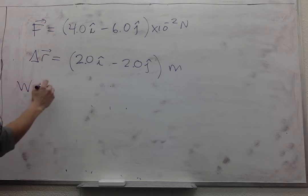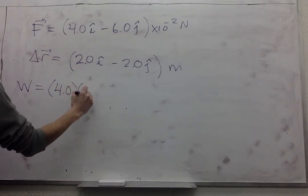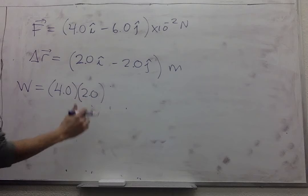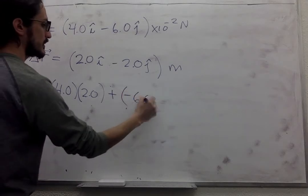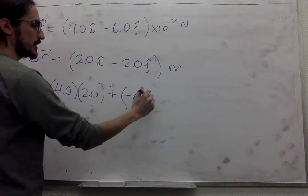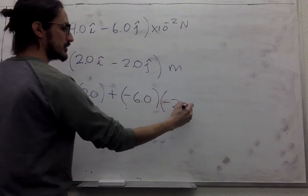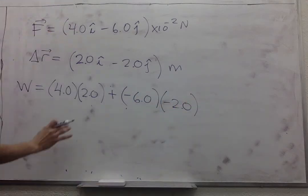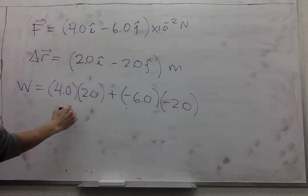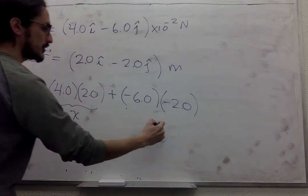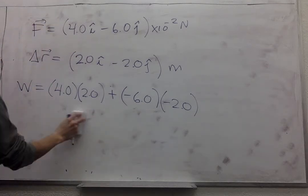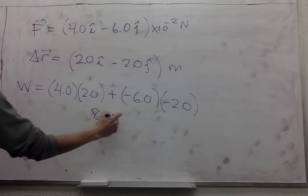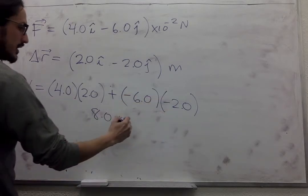So the work is 4.0 in the I direction times 2.0 in the I direction plus negative 6.0 in the J direction times negative 2.0 in the J direction. They don't have the direction anymore, they're just the components. So this is x, this is x, this is y. So this is 8, and minus and minus that's plus, so 12.